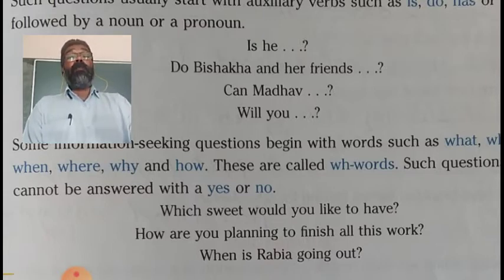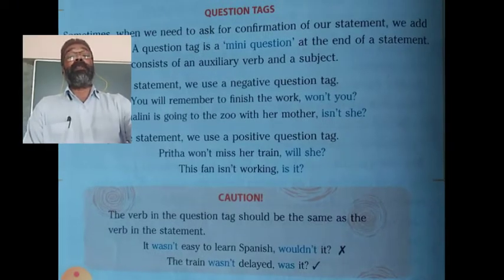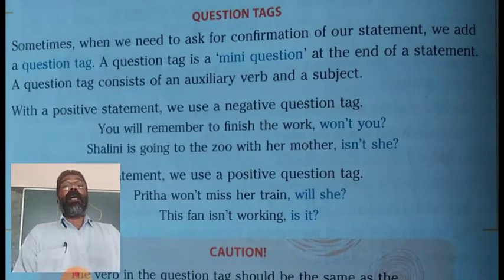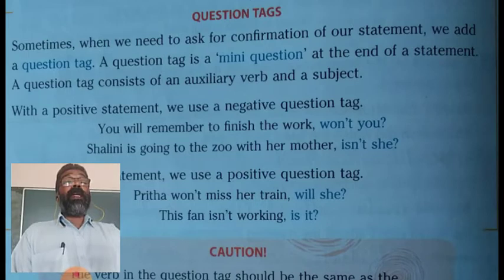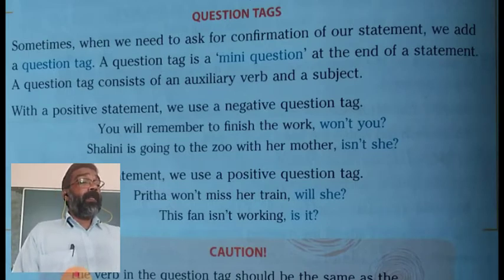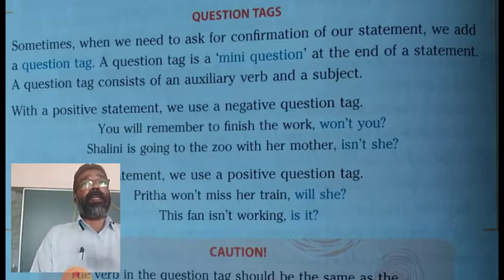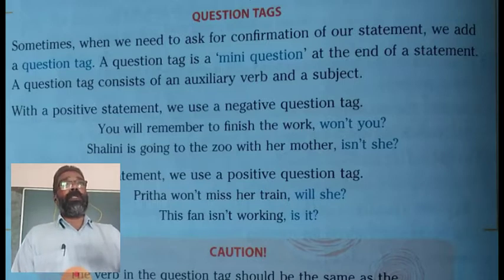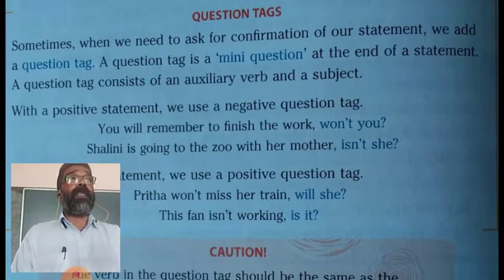Now in questions there is one more thing — question tags. Question tags are attached to a statement. We make a statement, and for confirmation of what we made in the statement, we add a very short question containing a verb — usually an auxiliary verb — and a subject. After a comma, we place this short question at the end of the sentence. Such questions are known as question tags.